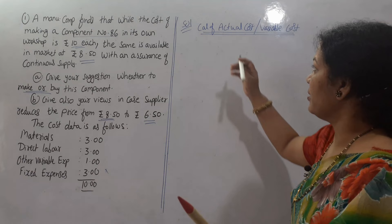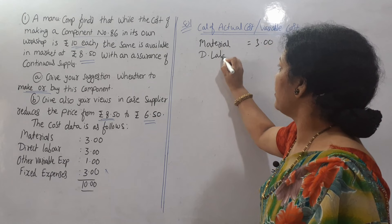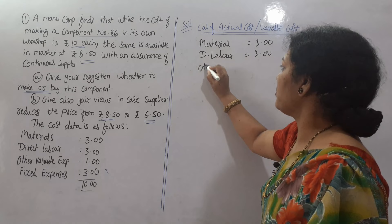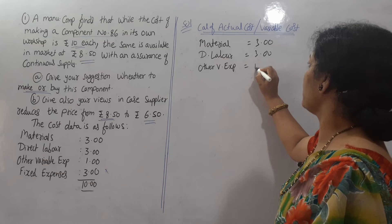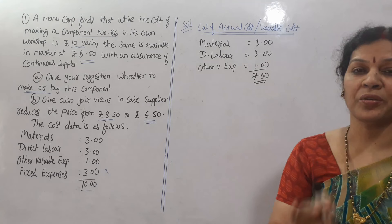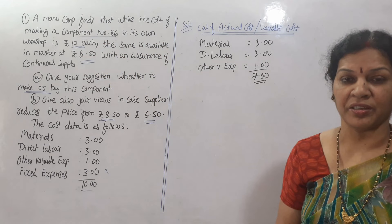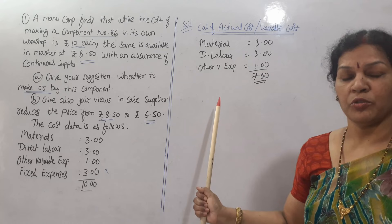We take material: 3 rupees, direct labor: 3 rupees, and other variable expenses: 1 rupee. We are not taking fixed expenses. So the total actual cost comes to 7 rupees. If we want to manufacture, the actual cost is 7 rupees. But the same is available in the market at 8 rupees 50 paisa, which is more. So it is better to make the product.